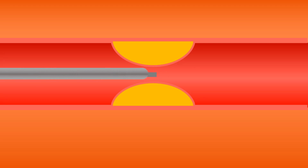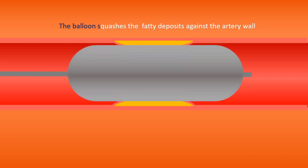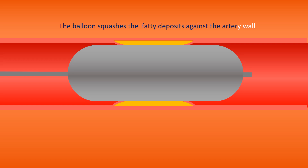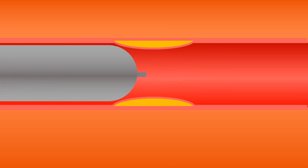When the catheter is in place, a thin wire is guided down the length of the coronary artery, delivering a small balloon to the affected section of the artery. The balloon is then inflated to widen the artery, squashing fatty deposits against the artery wall, thereby enlarging the lumen, and after the deflated balloon is removed. This allows the blood to flow through the artery more freely.